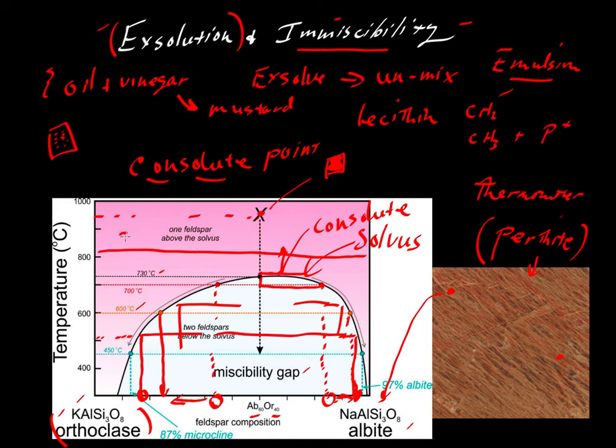Anywhere in this pink area, we would have a single feldspar. Whereas down here, we would have two feldspars. And those two feldspars would often have textural characteristics of a perthite. So that's an example of exsolution and immiscibility. We'll take a look at other examples relating to feldspars.